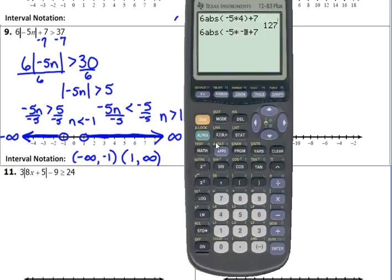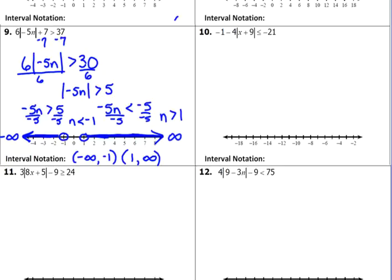But it can't hurt to check one on the left side as well, so let's check negative 2. Plug in negative 2. That number is also supposed to be greater than 37, and it is. So that means we've probably got it right. Okay, let's look at number 10.